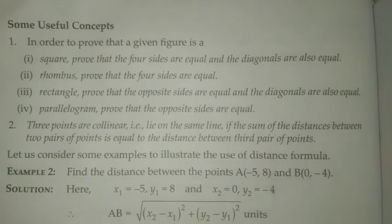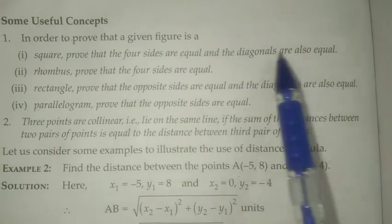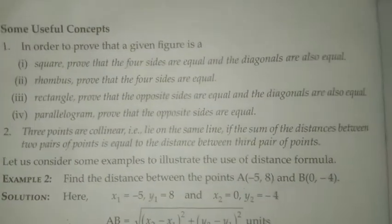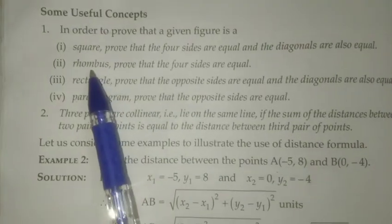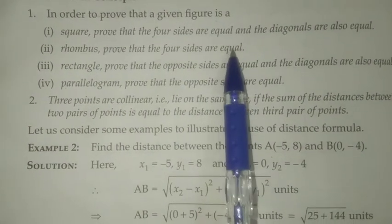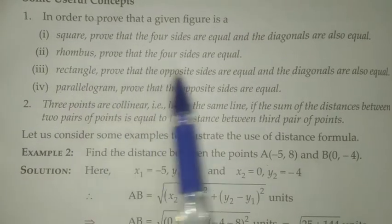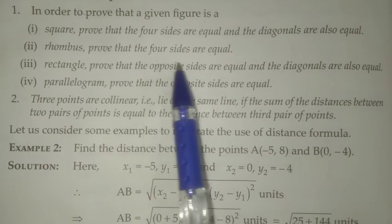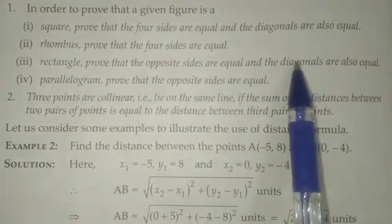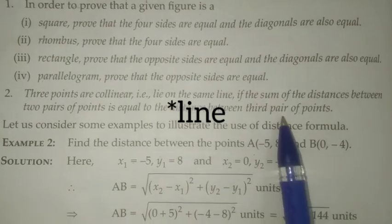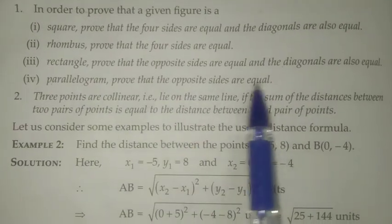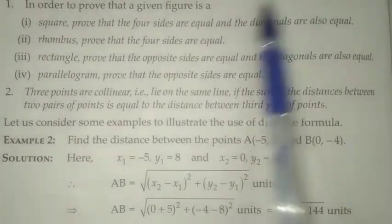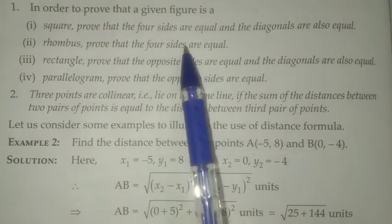Using distance formula, you can find out the sides. If the sides are equal and the diagonals are equal, then it's a square. If the sides are equal but the diagonals are not equal, then it's a rhombus. For a rectangle, the opposite sides are equal and the diagonals are also equal. For a parallelogram, the sides are equal but the diagonals are not equal. So when given four points, find the sides and diagonals.